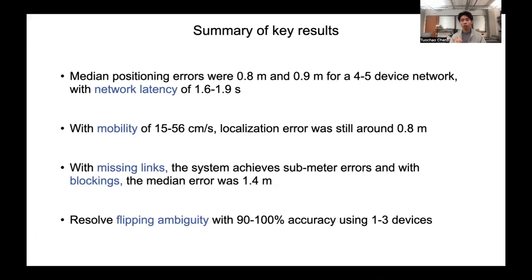And our system can still work with reasonable device mobility of 15 to 56 centimeters per second, missing links, and blockings. Finally, the accuracy of resolving the flipping ambiguity with 90 to 100% accuracy increases as the device number increases.